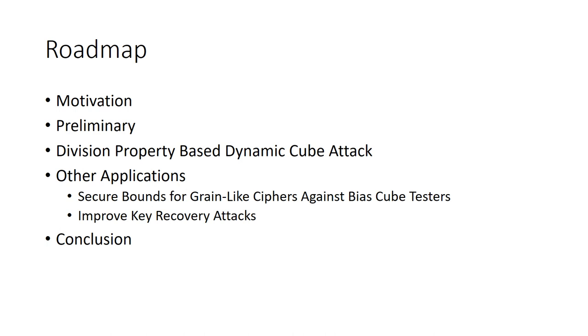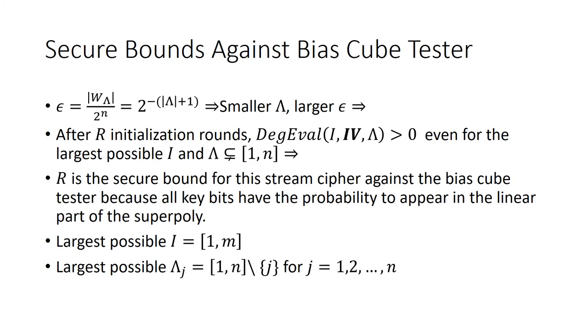The concept of split set can also be used in other situations. As we have demonstrated, the smaller the minimum split set is, the more significant the bias phenomenon can be. For an r-round stream cipher, if the degree evaluation algorithm returns a positive integer even for the largest possible cube I and the largest possible split set lambda, we regard such round number r as the secure bound for the cipher against the bias-based cube tester.